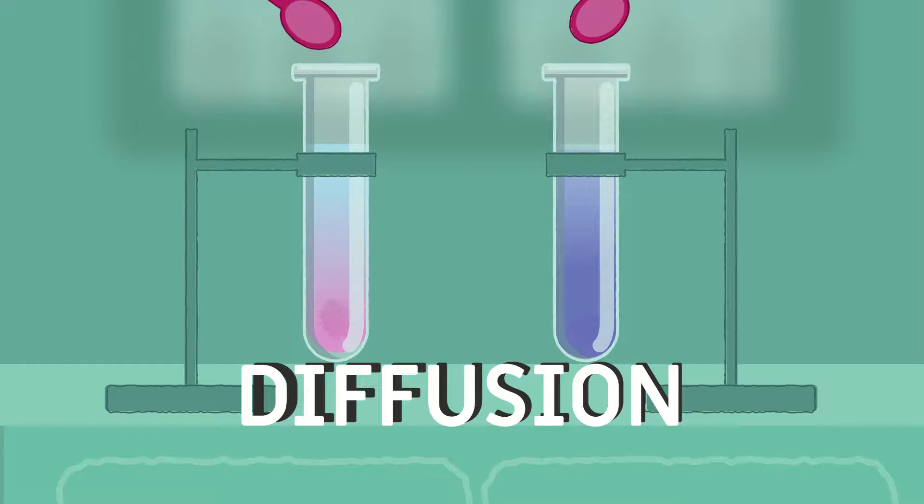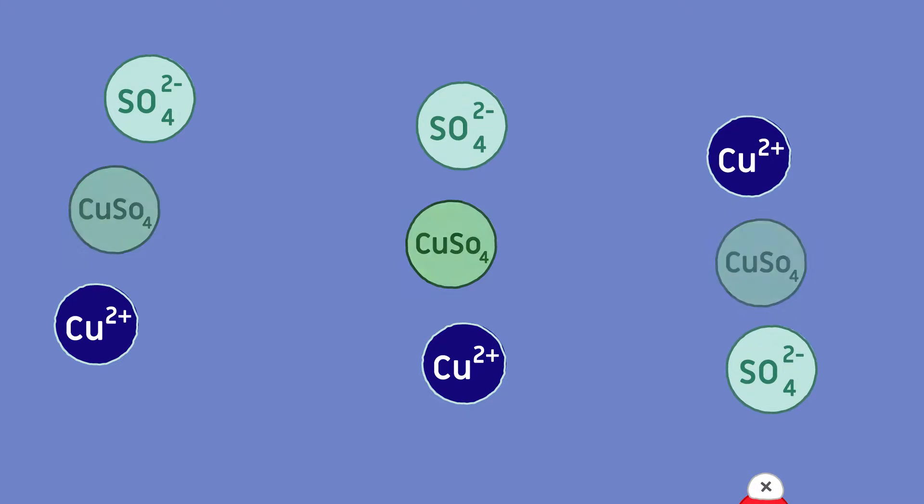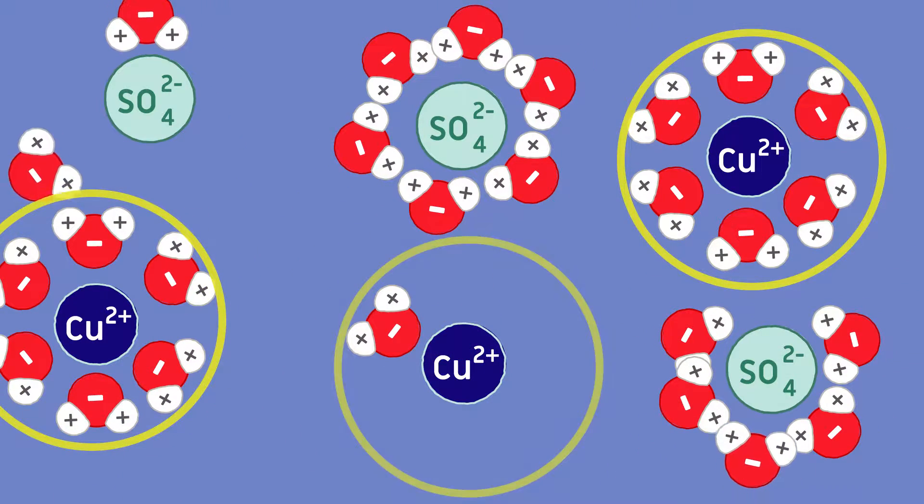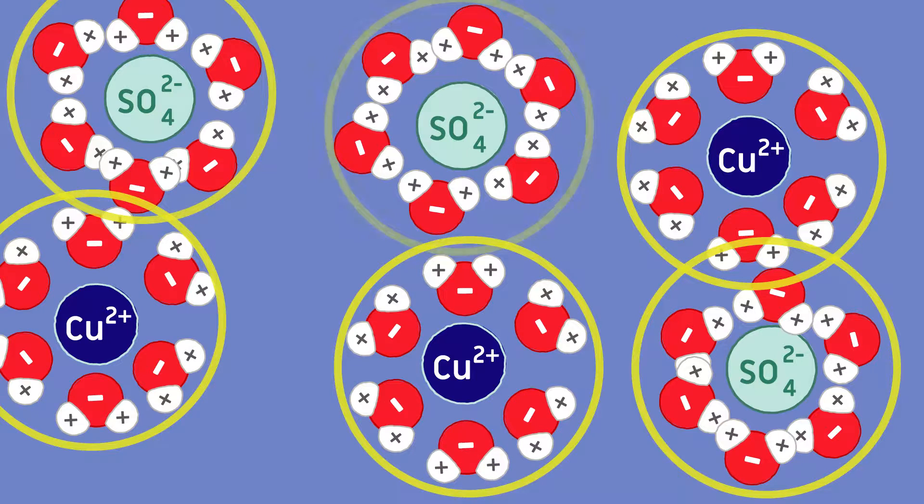The solvent and the solute interact with each other. The original chemical bonds break and new ones form. The molecules of the solute are getting surrounded by water molecules, resulting in the formation of hydrated ions.